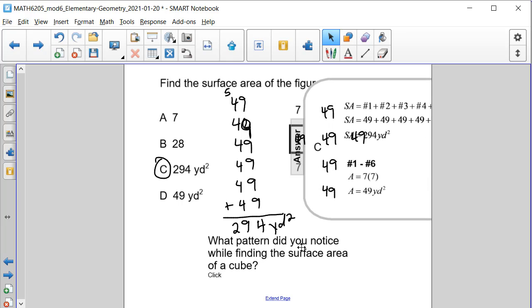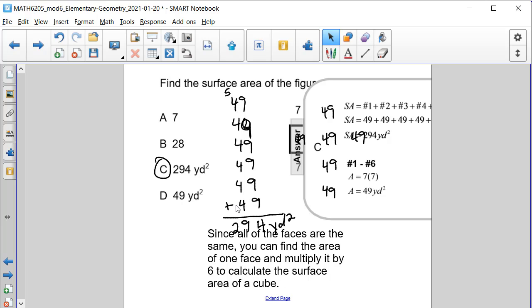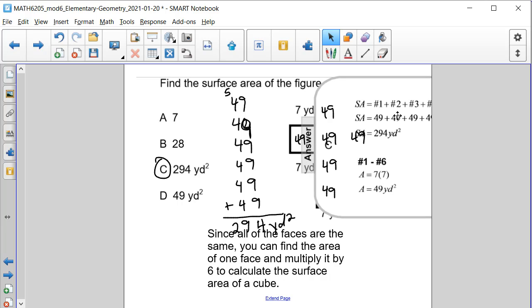What pattern do you notice when finding the surface area of a cube? Well, we added up 49 six times. You could also calculate the area of one face and multiply it by six and you will get that same value.